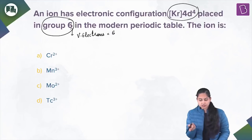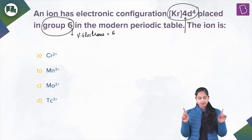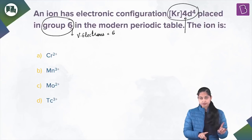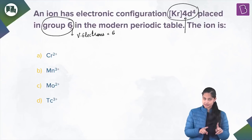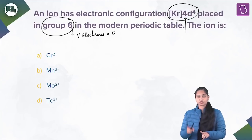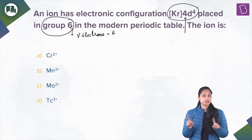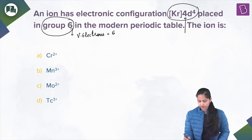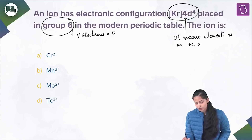However, in the given electronic configuration [Kr] 4d⁴, we observe that there are two valence electrons less than expected. Since the metal belongs to group 6 with 6 valence electrons in the ground state, but has two less, the element is in +2 oxidation state.